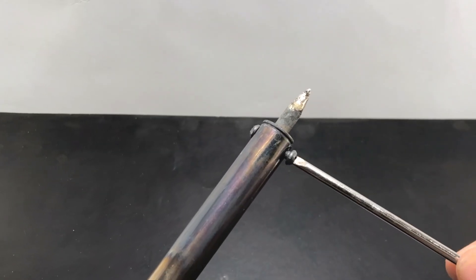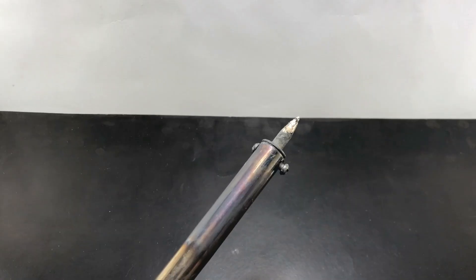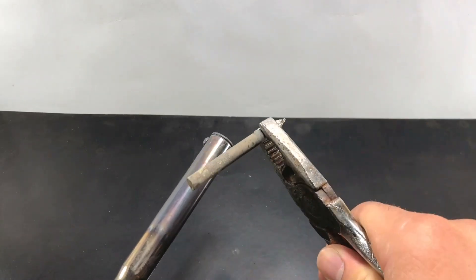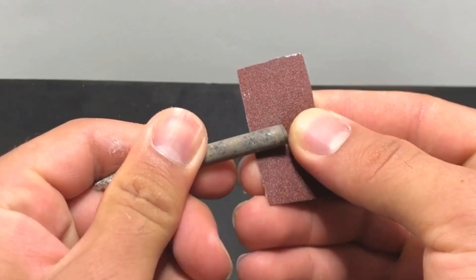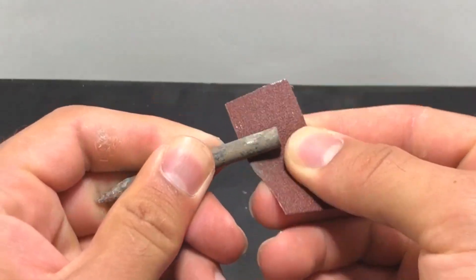We separate the copper tip of the soldering iron. We clean the end part using sandpaper.